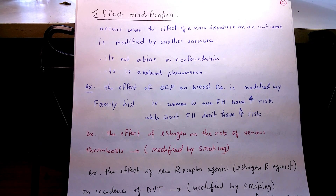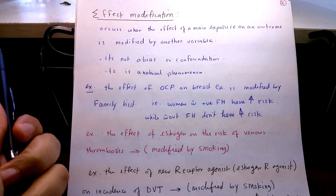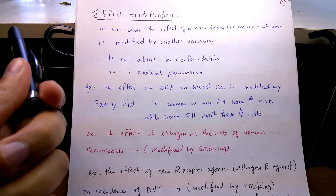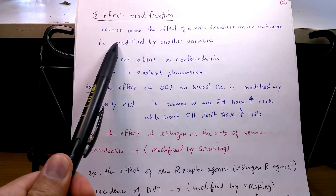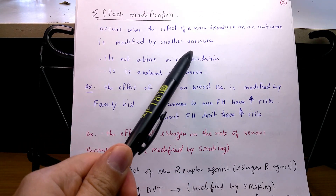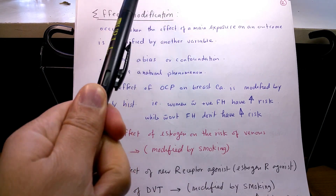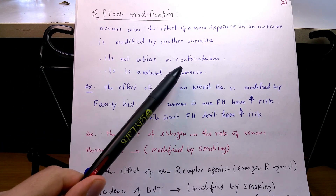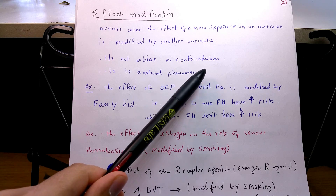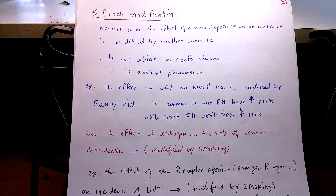Another concept we have to differentiate from confounders is effect modification. Here, the effect of the main exposure on an outcome is modified by another variable. But the modifier affects mainly the exposure — it doesn't affect the disease by itself. It is not a bias, unlike confounders. It is a natural phenomenon that we have to account for, study, and understand.